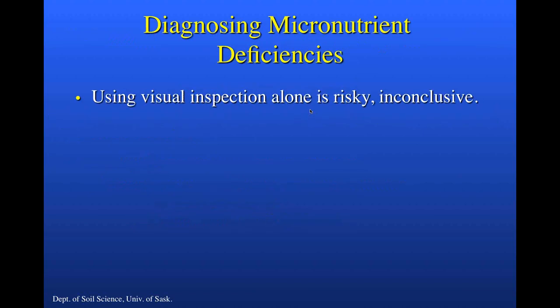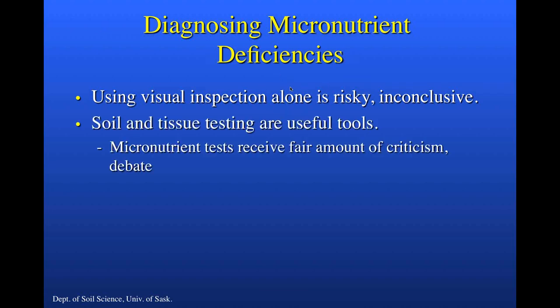When it comes to diagnosing micronutrient deficiencies, a visual inspection alone can be rather risky and inconclusive. For example, among the micronutrient metals like copper, zinc, manganese, and iron, they can sometimes produce similar symptoms. Zinc deficiency and iron deficiency can both sometimes produce interveinal chlorosis. So using visual inspection alone is a good first clue, but we do need to consider the diagnostic tools available to us to be more conclusive.